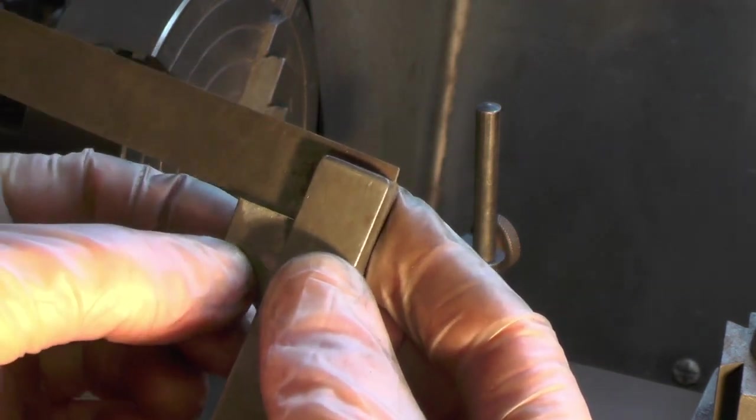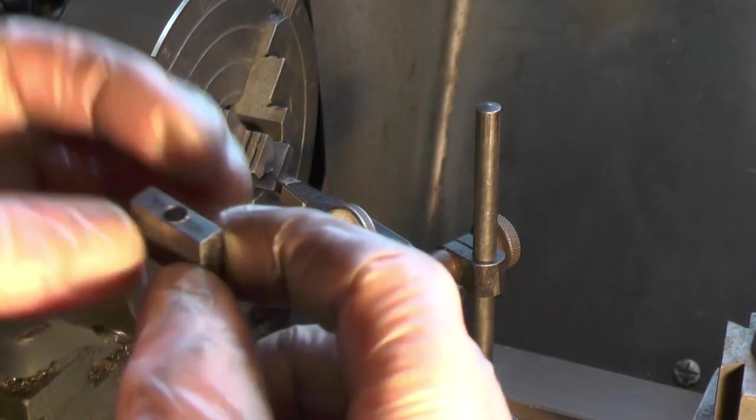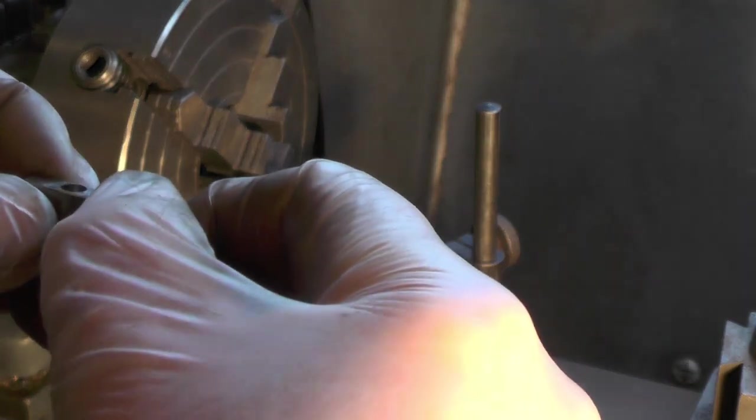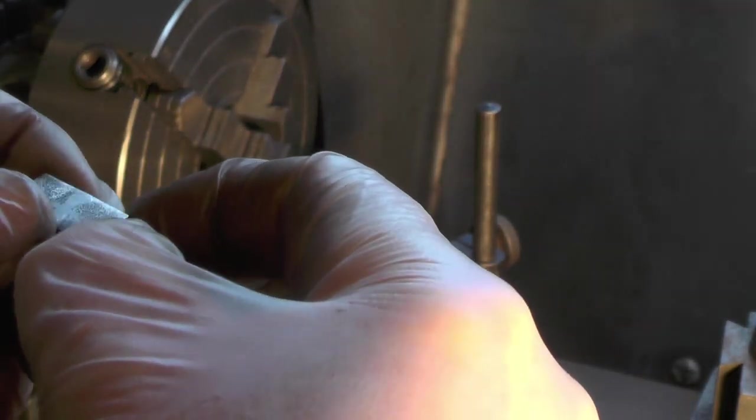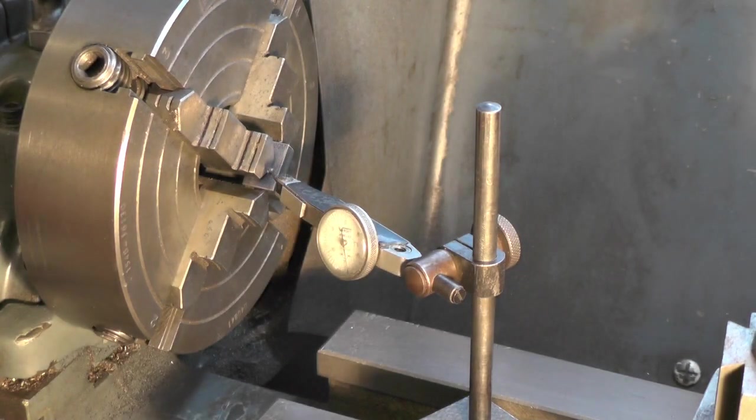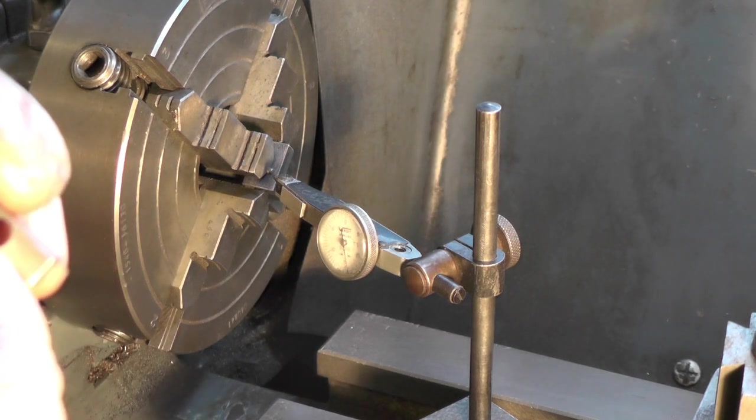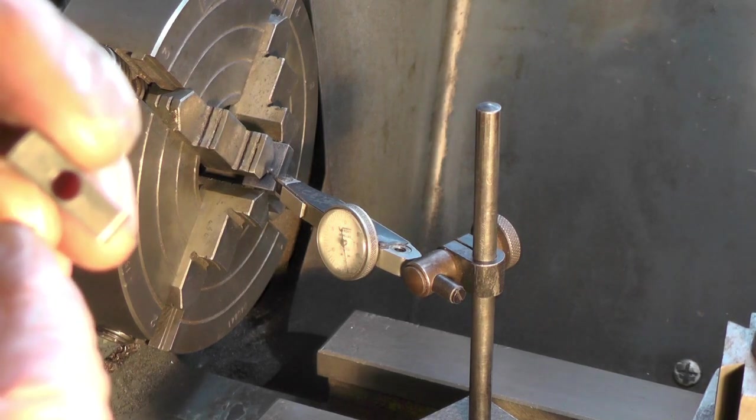Then when you put in your chuck and gripping on the four jaws, you can then set your dial test indicator onto all the four corners. And when you've got them within a couple of thousandths, you'll know that you're very, very near to that center, probably a lot nearer than you'd ever be by doing it by eye by center popping it.